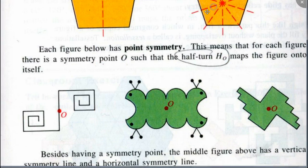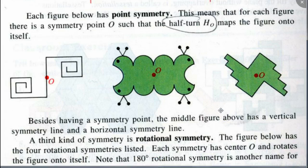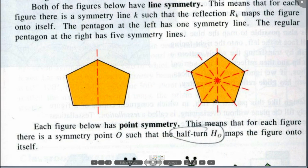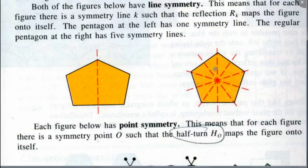So let's read this. Each figure below has point of symmetry. This means that for each figure there is a point O such that a half turn about O maps the figure onto itself. But does the figure on the top have a point of symmetry? No. Why not? Because how they define point of symmetry — it has to have a half turn.